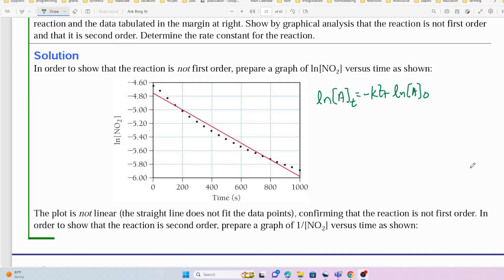We're first asked to demonstrate that the reaction is not first order. So in order to do that, we must prepare a graph according to our first order integrated rate law, where ln[A]t equals negative kt plus ln[A]0.